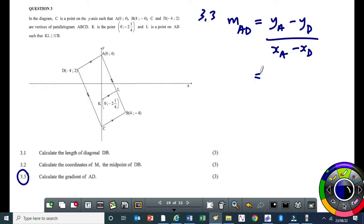What is y A? It's 4. What is y D? It's 2. Then x A is 0, x at D is minus 4. So you get 2 in the numerator, and 4 in the denominator, which is a half. So the gradient of AD is gonna be a half. That's grade 9. 3.3, it's a grade 9 question.